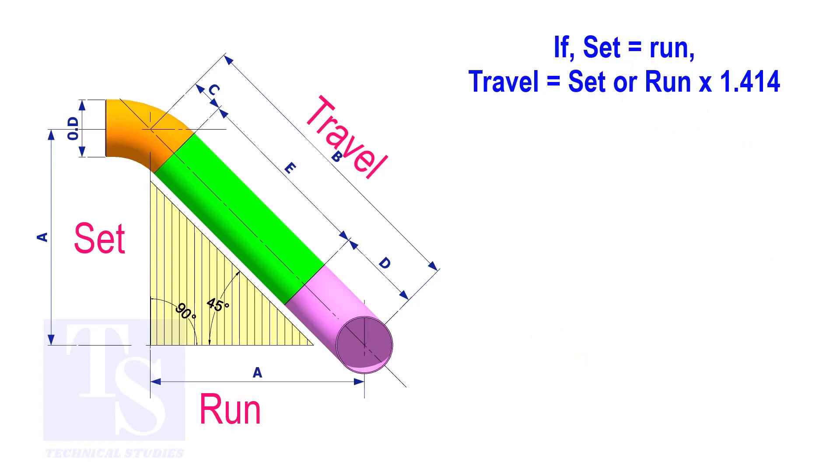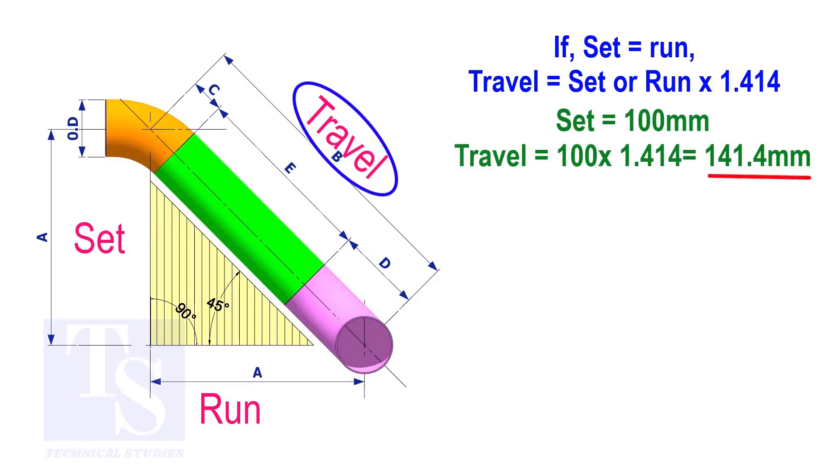Assume that the value of the set is 100. The value of the travel is 100 multiplied by 1.414 equals 141.4.